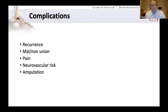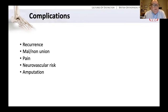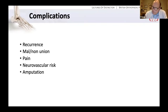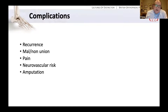The patient needs to be aware of complications which will involve infection, numbness, recurrence of the deformity, malunion or non-union. Sometimes bony prominences develop on either side medially and laterally which rub on the toe. The toe can stay painful. There is a neurovascular risk and a risk of amputation, although very low.